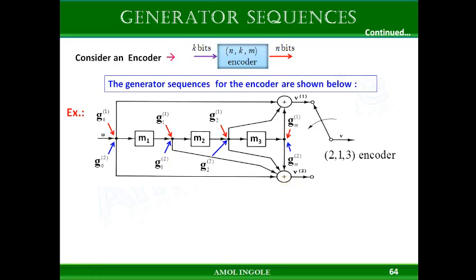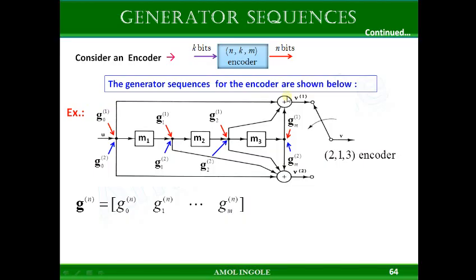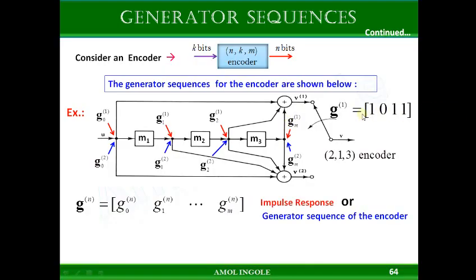Let us see how we can write the generator sequence. The generator sequence can be written as gn0, gn1, up to gnM for n outputs. There are four different bits that are XORed to get outputs 1 and 2. In the first one, the bit stored in M1 is not taken into consideration. Therefore, the generator sequence for output 1 will be 1, 0, 1, 1 — where 0 represents M1 not being connected.